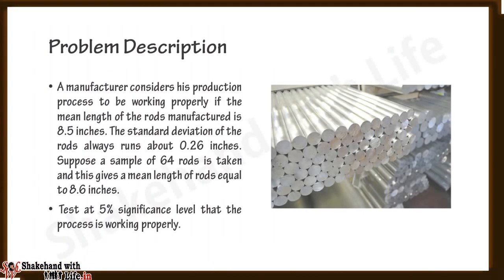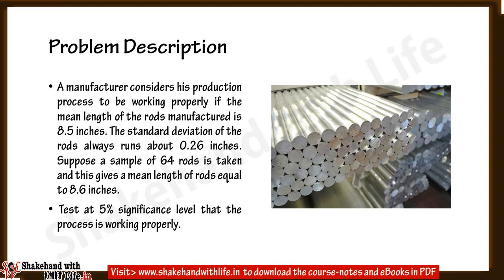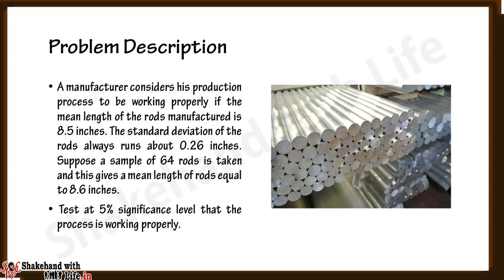Here is the problem: a manufacturer considers his production process to be working properly if the mean length of the rods manufactured is 8.5 inches. The standard deviation of the rods always runs about 0.26 inches. Suppose a sample of 64 rods is taken and this gives a mean length of rods equal to 8.6 inches.